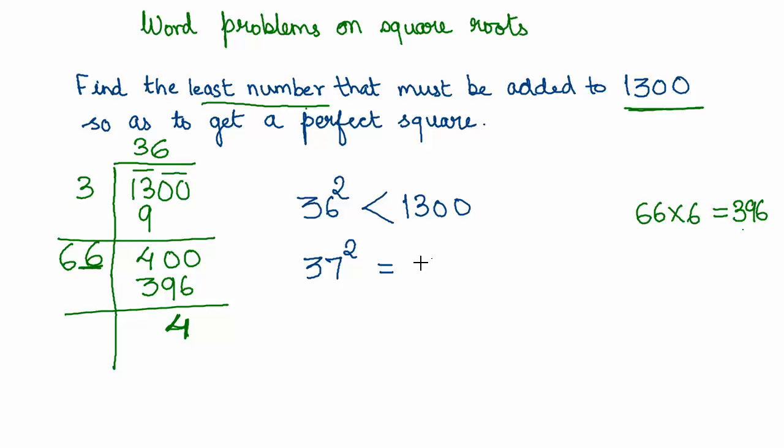The next square number is 1369, so therefore you can figure out what must be added to 1300 to get a perfect square. All you do is subtract 1369 minus 1300, which gives you 69.